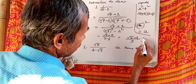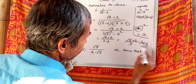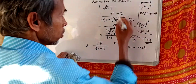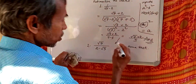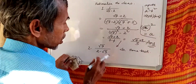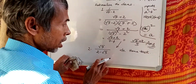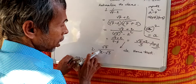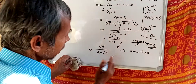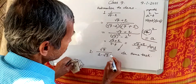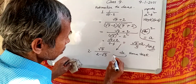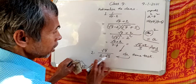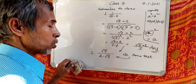This is the answer. Now after seeing and understanding this problem, students are asked to rationalize number 2 as a home task. Rationalize the denominator, number 2. Do home task.